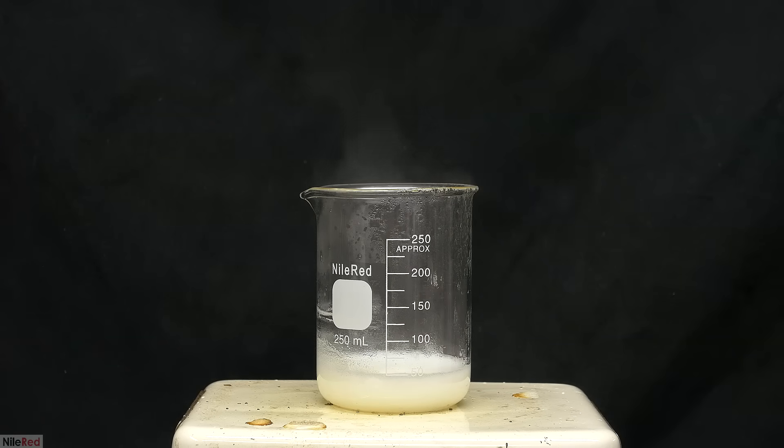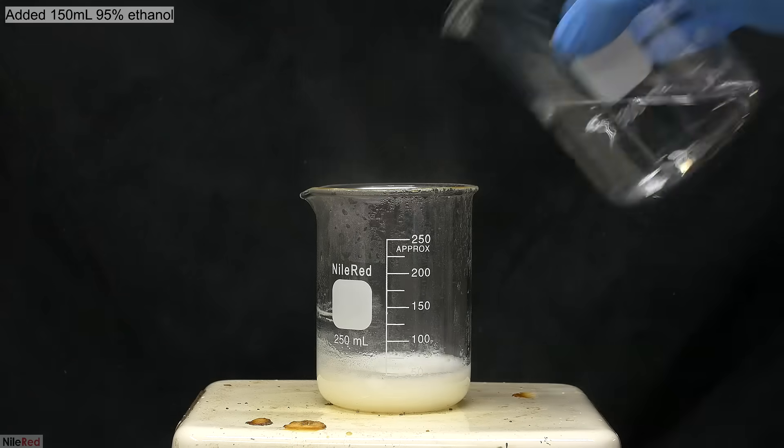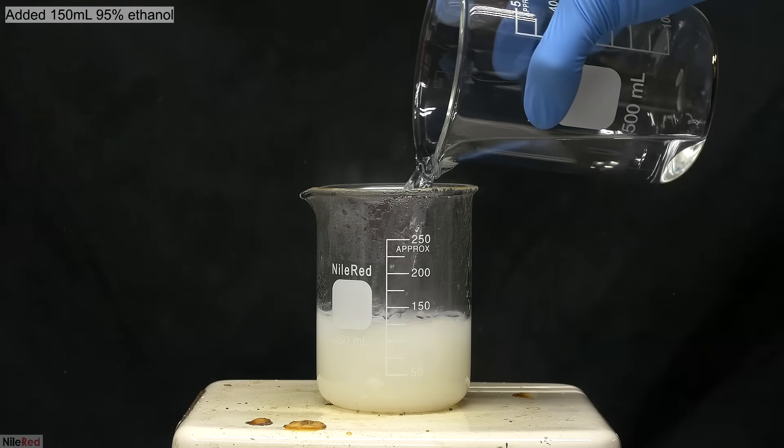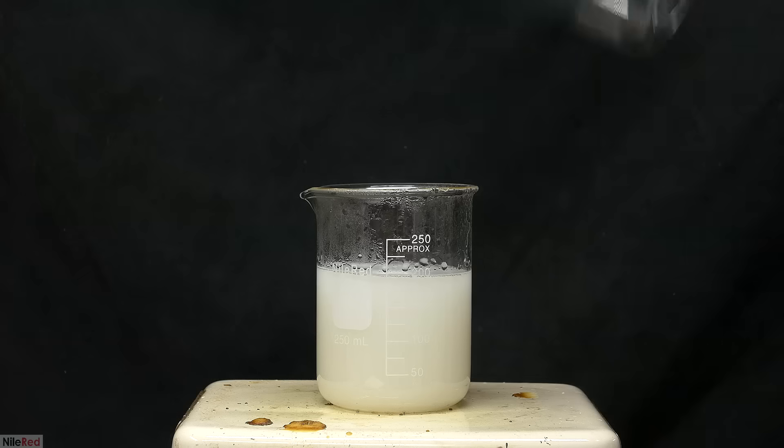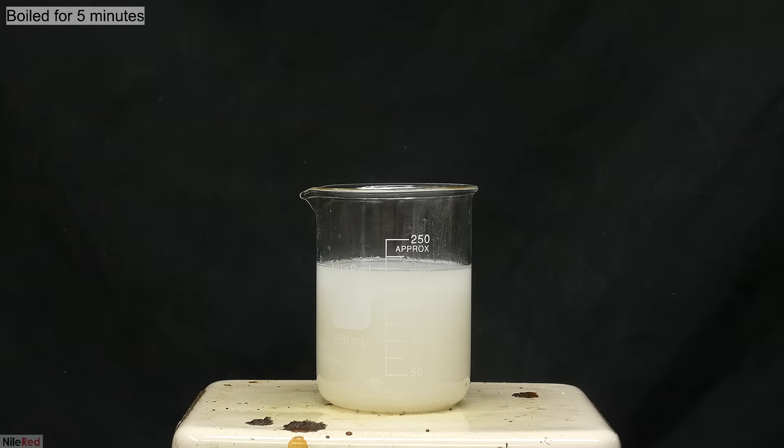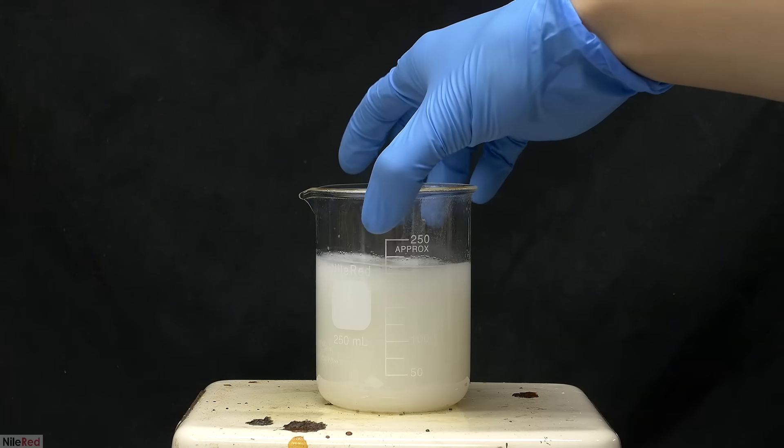In the beaker, I now have a concentrated mixture of lactose and minerals, and I need to separate them. To do this, I add 150 milliliters of 95% ethanol. This mixture is then brought to a boil, and it's boiled for 5 minutes. The lactose is soluble in this hot ethanol solution, but the minerals aren't, so they should remain undissolved.